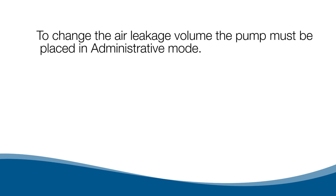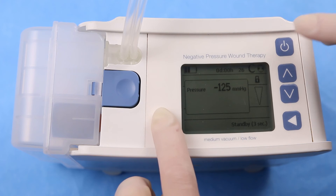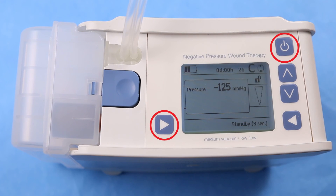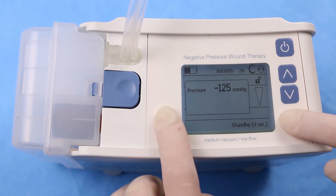To change the air leakage volume, the pump must be placed in administrative mode. To enter the administrative mode, press and hold the bottom left button and press the top right button, then press the left and right buttons at the same time.